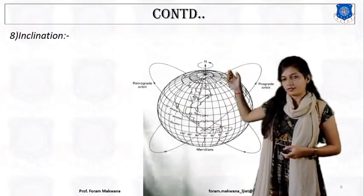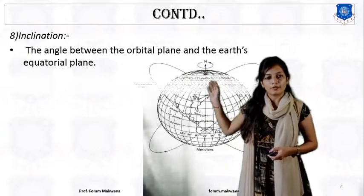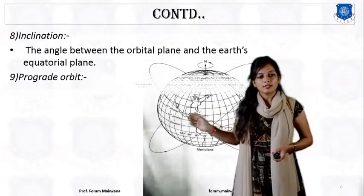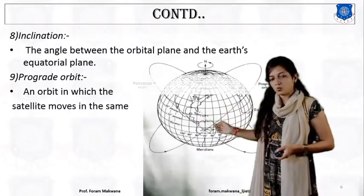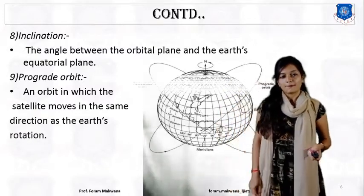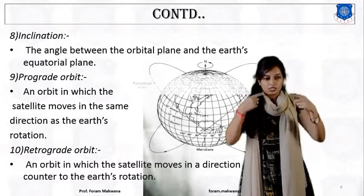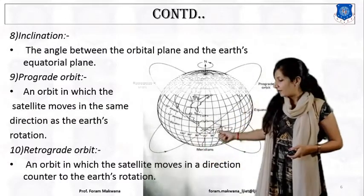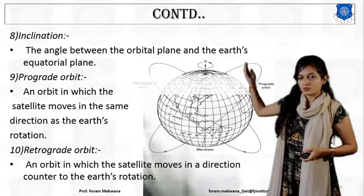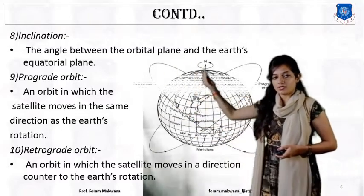What is the inclination angle? Inclination means the angle between the orbital plane and the earth's equatorial plane — that is called the inclination angle. What is a prograde orbit? It is the orbit in which a satellite moves in the same direction as the earth rotates. Retrograde means the orbit in which a satellite moves in the anticlockwise direction relative to the earth's rotation. From this image you can see the prograde orbit moves in the same direction as the earth rotates, and retrograde moves in the anticlockwise direction.